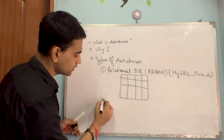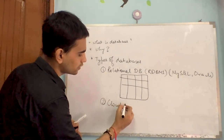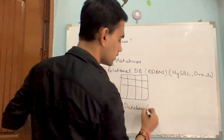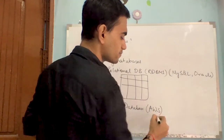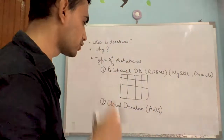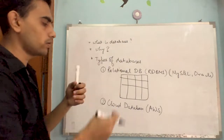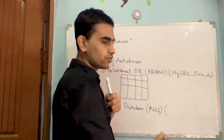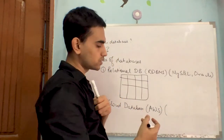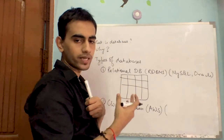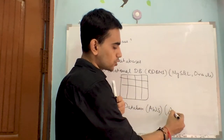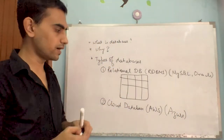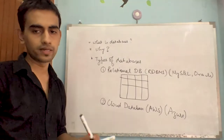Then you also have the cloud database. If you have worked on AWS — Amazon Web Services — you can deploy your code there, run machine learning code, and execute those workloads. If you have worked with Microsoft APIs, you may have come across Microsoft Azure. These are some of the databases provided by Amazon and Microsoft for cloud-based implementations.